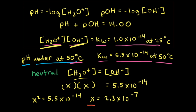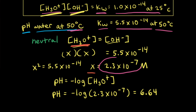Taking the square root of both sides, we find that X equals 2.3 times 10 to the negative 7th. Since X equals the concentration of hydronium ions, the concentration of hydronium ions is 2.3 times 10 to the negative 7th molar. Using our pH equation, we take the negative log of that concentration and get that the pH is equal to 6.64.